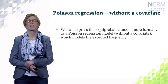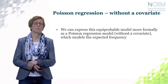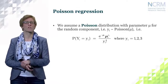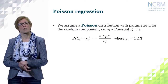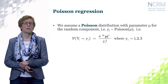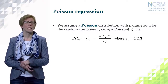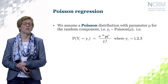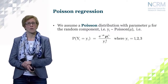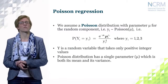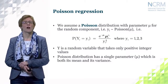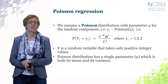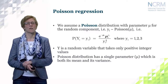We can now express the equiprobable model more formally as a Poisson regression model without a covariate, modelling expected frequencies. We assume a Poisson distribution with parameter mu for the random component, meaning the response variable Y follows a Poisson distribution. Y is a random variable taking only positive integer values, and the Poisson distribution has one single parameter mu, which is both the mean and the variance of the distribution.